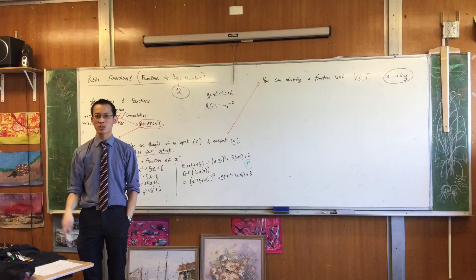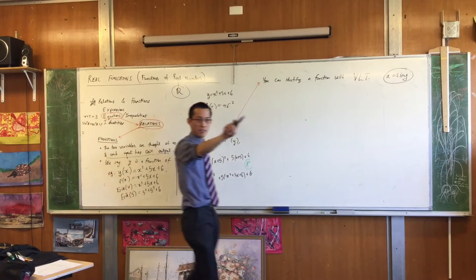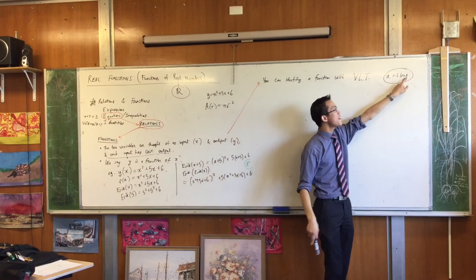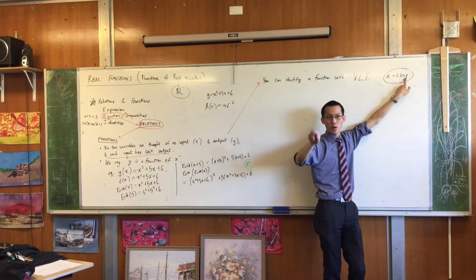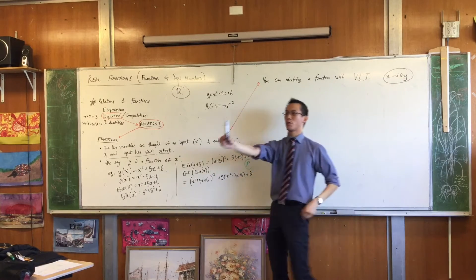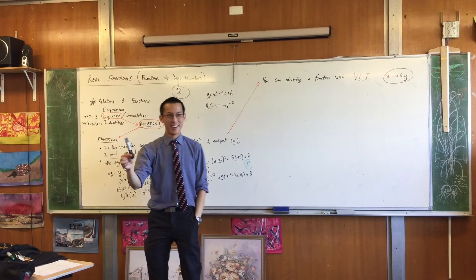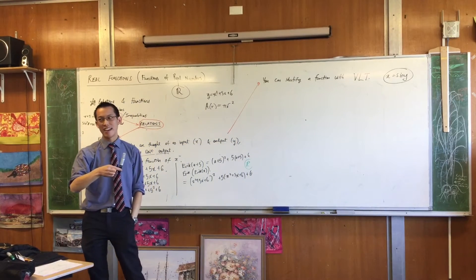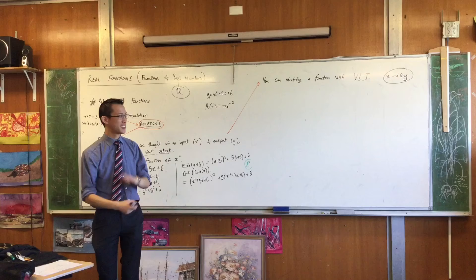Now, you've already got what y equals sine x looks like. It waves up and down and up and down and up and down, right? This is not going to wave up and down. It's going to wave left to right from side to side. So when you put your vertical line against that, what's going to happen? It's going to intersect an infinite number of times. It's not a function.